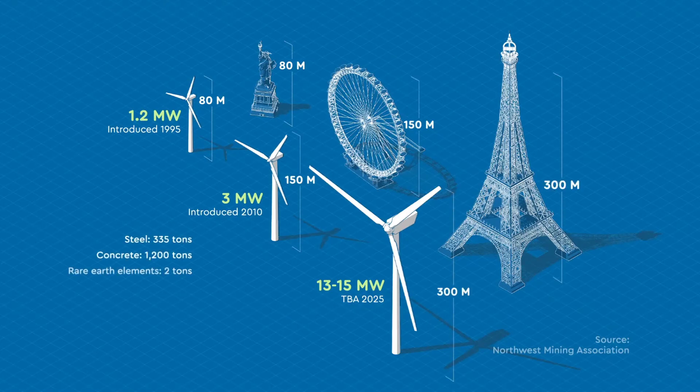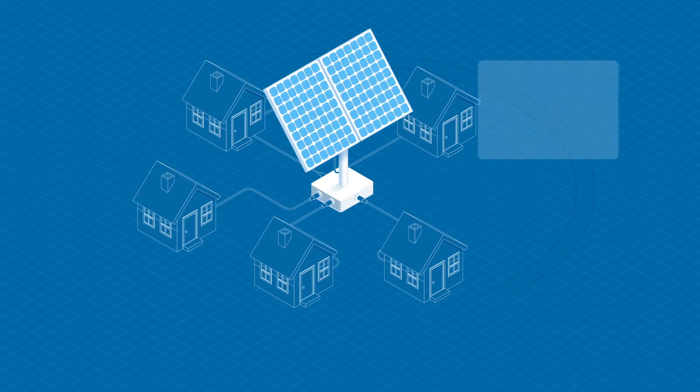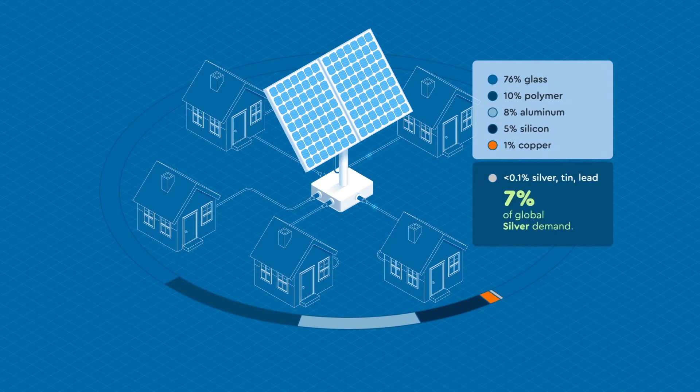One 3 megawatt wind turbine needs 4.7 tons of copper alone. Solar PV cells also need many critical minerals and even precious metals such as silver.